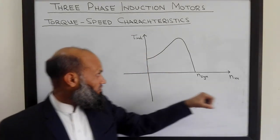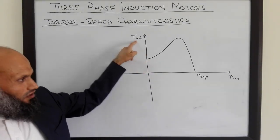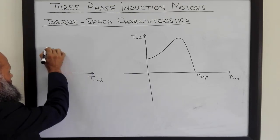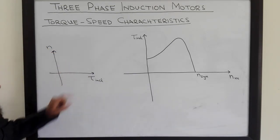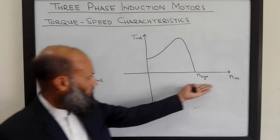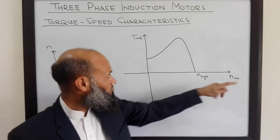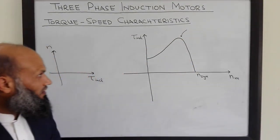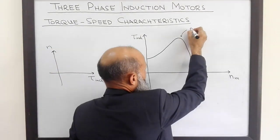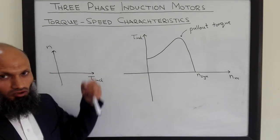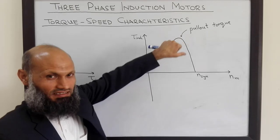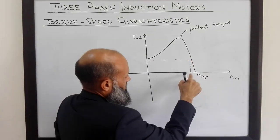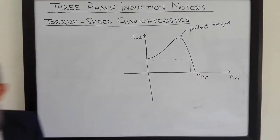On this axis we have speed of the motor and on the vertical axis we have induced torque. You are more used to the torque speed characteristics with induced torque on the horizontal axis and the speed of the motor on the vertical axis — that is the situation for DC machines. The maximum torque that can be generated by the induction motor is called the pull-out torque. The rated torque, which corresponds to the full load torque, is much less than the pull-out torque, and the speed corresponding to full load torque is the rated speed of the induction motor.